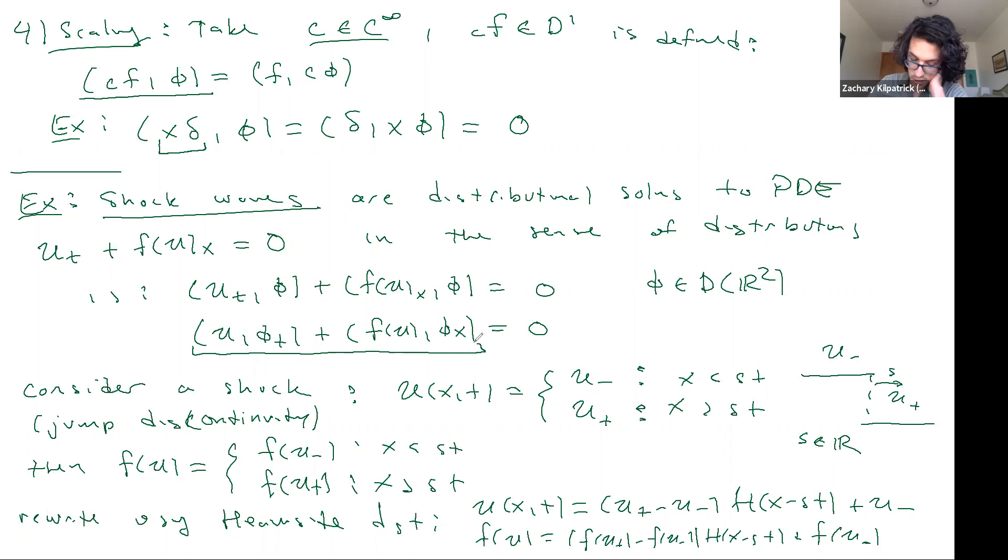We can sort of differentiate these now using the chain rule. But it's going to be kind of in the sense of distribution. So we're being a little bit loose here about what we mean by differentiations, but just for bookkeeping, let me write out what the derivatives would be for U sub T and F of U sub X.